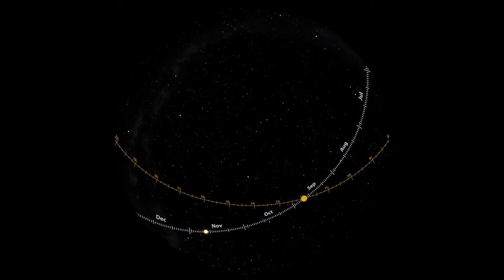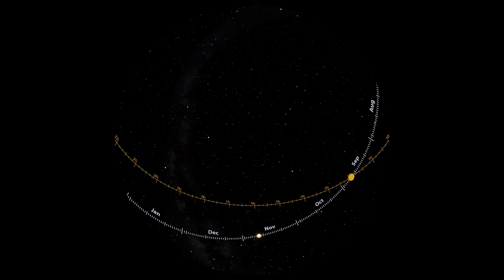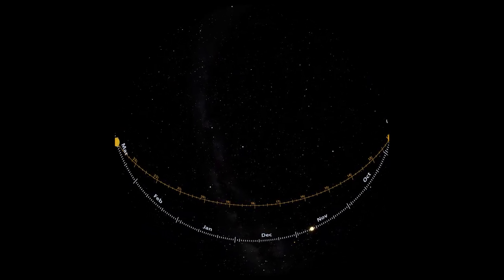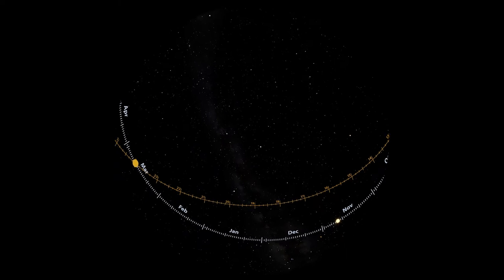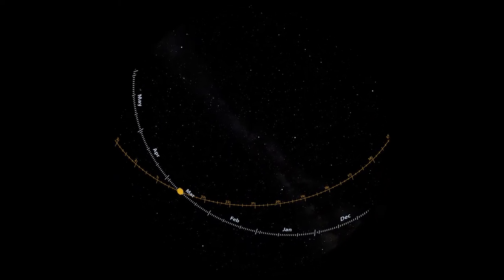And hey, the ecliptic is tilted versus the equator, and it crosses the equator at two points. At two times during the year, the sun appears directly overhead on the equator. That only happens on the first days of spring and fall: the equinoxes.